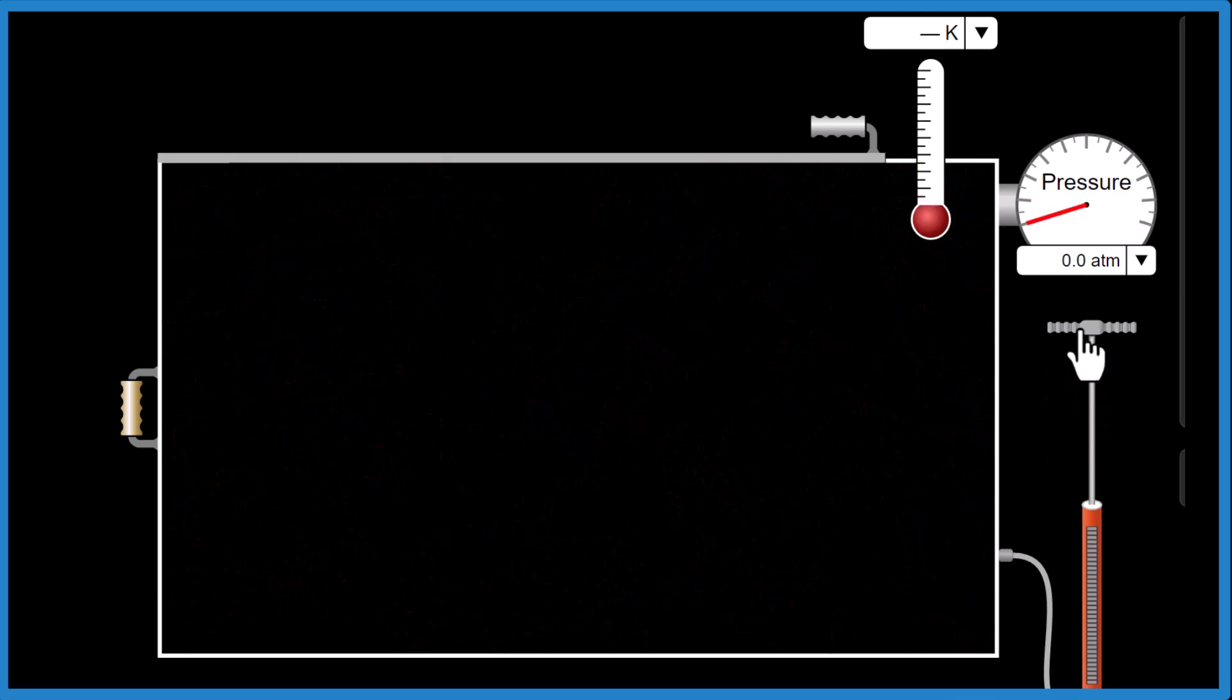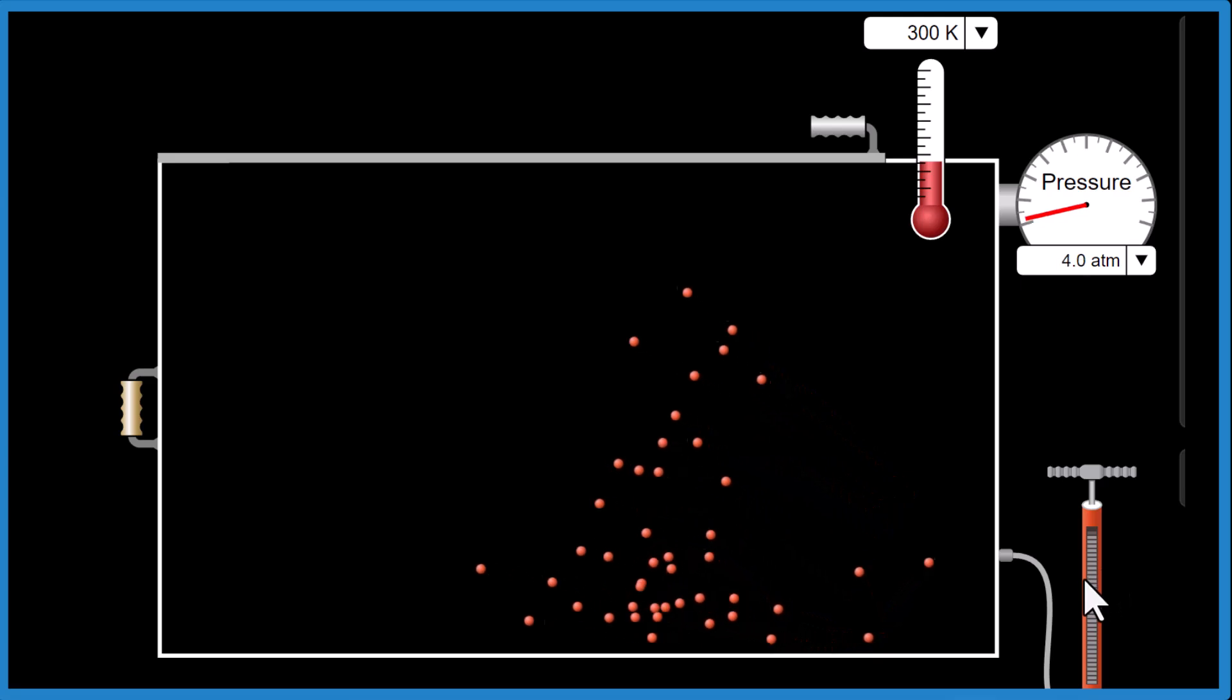For ideal gases, we're also assuming that they don't really interact with each other. They don't repel or attract. And if we have a large volume here, low pressure, they don't really have a chance to interact.